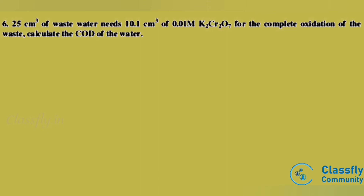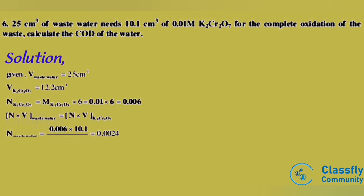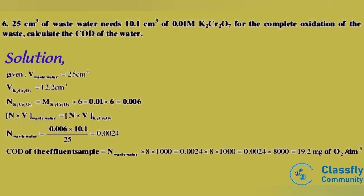Fifth problem: 25 cm³ of waste water needs 10.1 cm³ of 0.01 molar K2Cr2O7 for the complete oxidation of the waste. Calculate the COD. Solution: V(waste water) = 25 cm³, V(K2Cr2O7) = 10.1 cm³, N(K2Cr2O7) = M(K2Cr2O7) × 6 = 0.01 × 6 = 0.06.